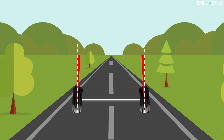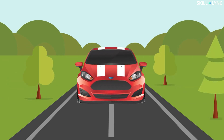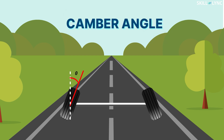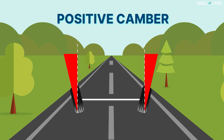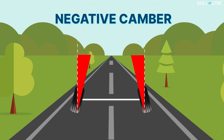The tilt we see in the wheels is called camber. Camber is used to change the contact area of wheels with the road, which in turn affects the grip of the wheels. The inward or outward tilt of the front wheels when viewed from the front is called camber, and the angle between the plane of the wheel with respect to an imaginary vertical axis is the camber angle. When the wheels are inclined outward it is called positive camber, and when the wheels are inclined inward it is called negative camber.